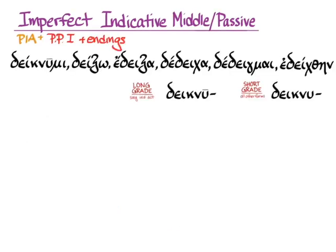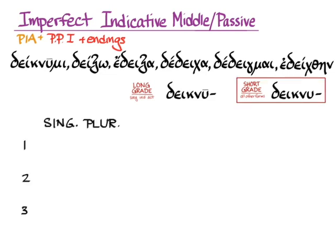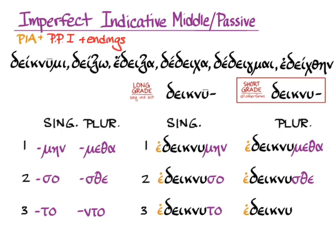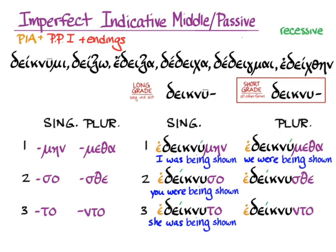In the imperfect indicative middle/passive, we use only the short-grade stem since we're not active. Applying the athematic endings: edeiknumēn, edeiknuso, edeiknuto, edeiknumetha, edeiknusthe, edeiknunto — with recessive accent. Meanings: I was being shown, you were being shown, she was being shown, we were being shown, y'all were being shown, they were being shown. The middle meanings would be: I was causing to be shown, etc.